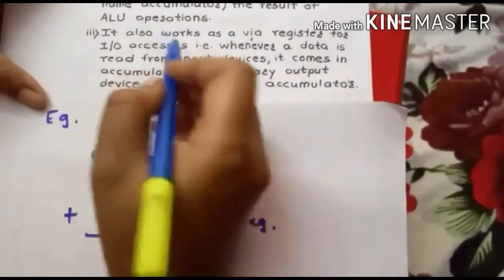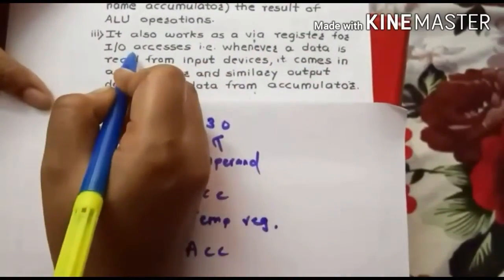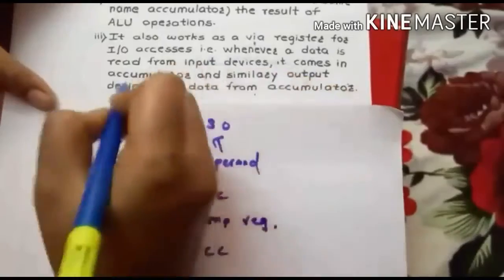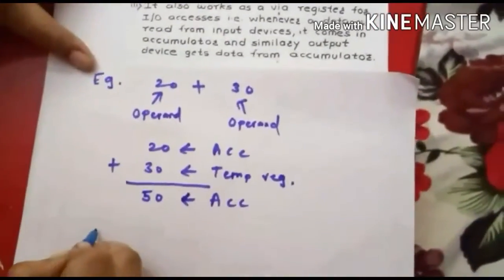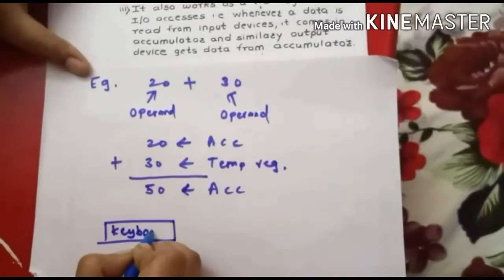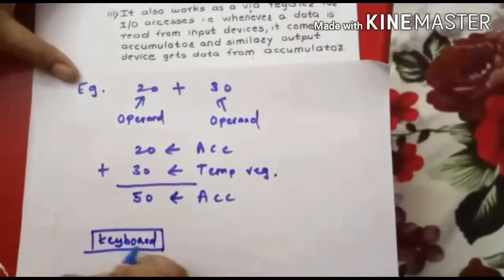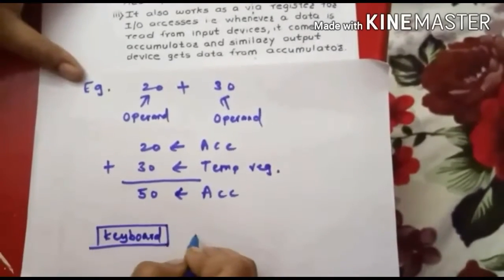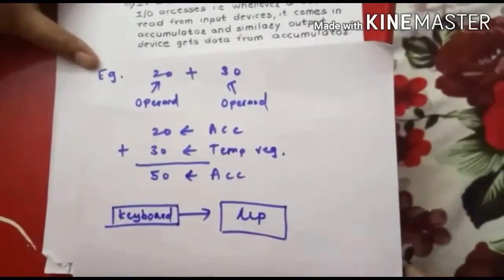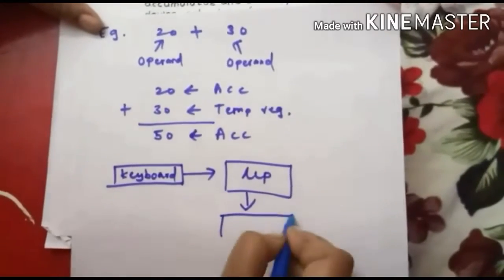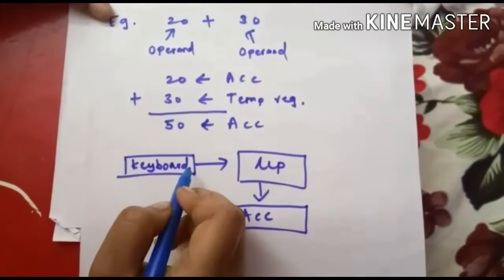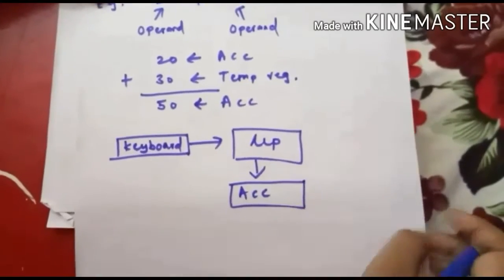The third function is that it also works as a wire register for input-output access. Whenever data is read from an input device, it comes into the accumulator, and similarly, the output device gets data from the accumulator. For example, if we are entering data through a keyboard into the microprocessor, the microprocessor will fetch that data and store it into the accumulator.